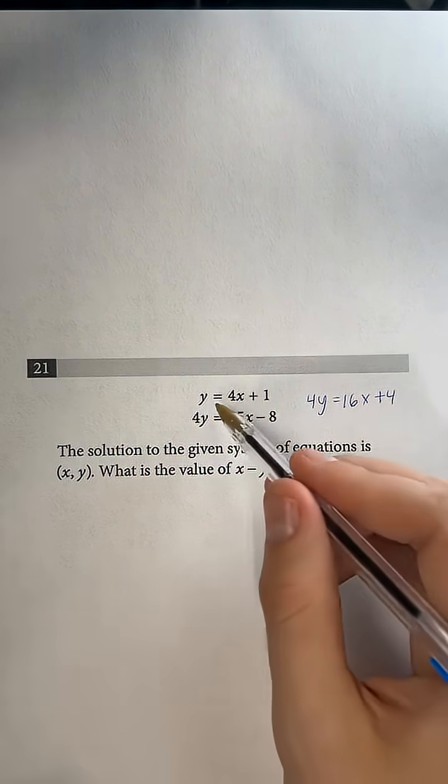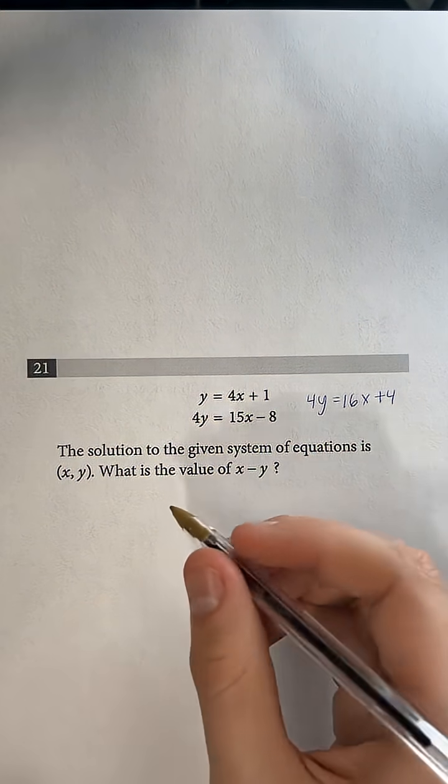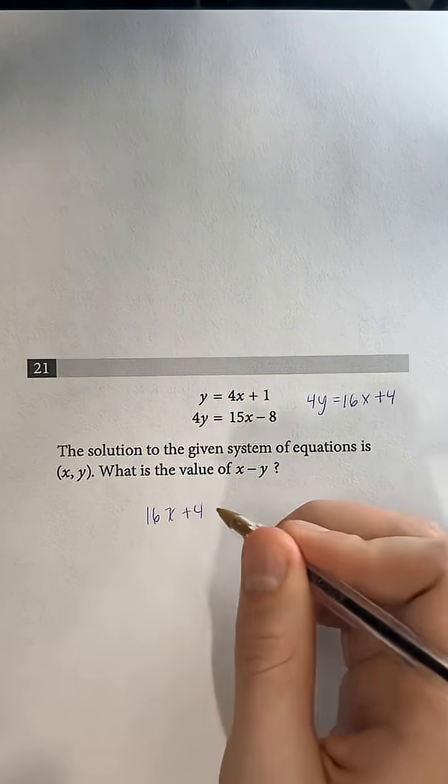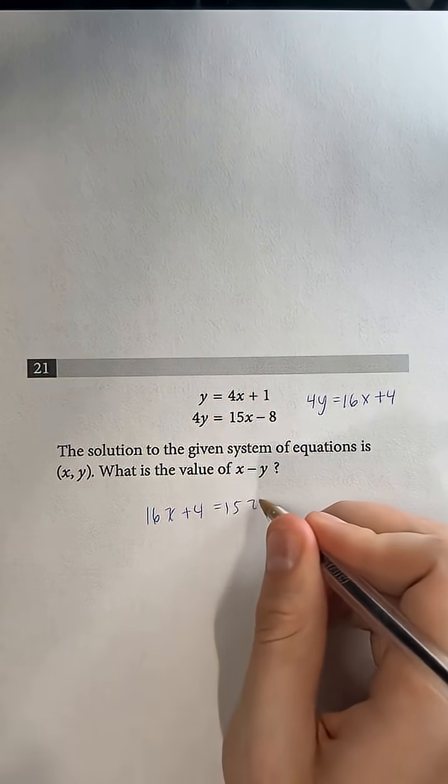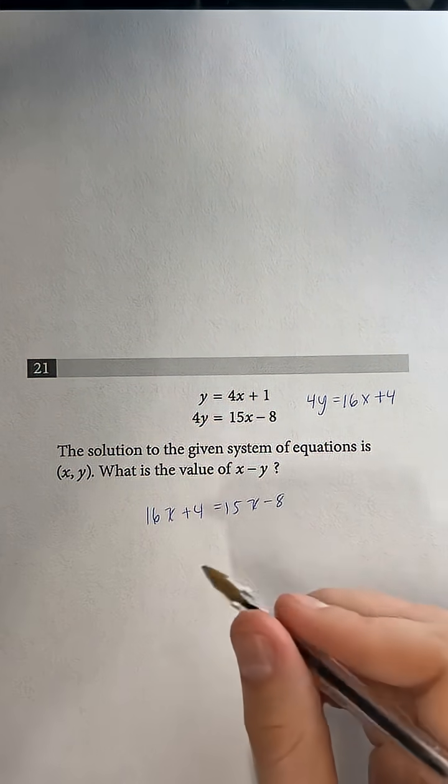And so we have basically two equations that both equal 4y, so we can actually set them equal to each other. So we'll have 16x plus 4 equals 15x minus 8, and then we can see that we can subtract 15x from both sides.